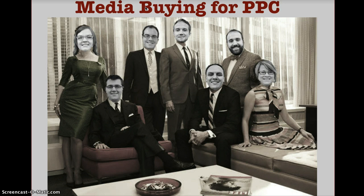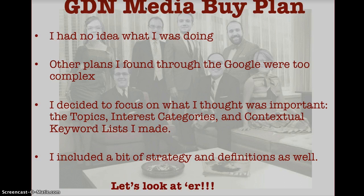Getting started, I'm going to talk about the Google Display Network media buy plan that I made. When I was told I needed to make a media buy plan for the Google Display Network, I said 'oh, what?' because I don't have a traditional marketing background, so I'd never created one. After Googling, all the examples I found were really complex — no good backbone or skeleton to start with — so I made my own. I decided what would be really important to show the client is how I'm going to spend their money, focusing on topics, interest categories, and contextual keyword lists to target automatic placements.